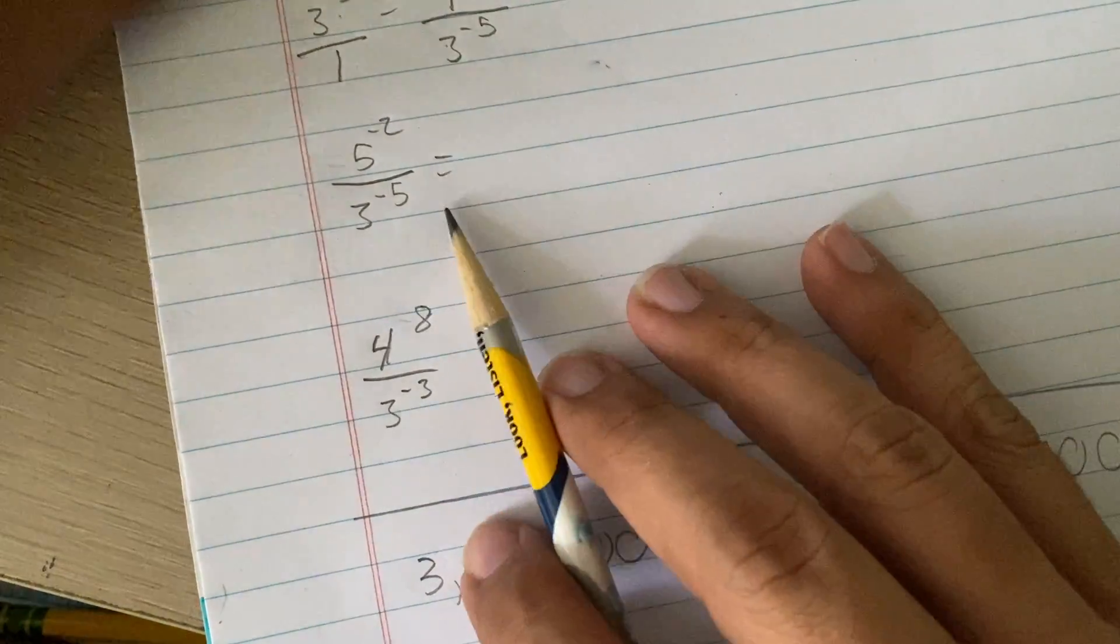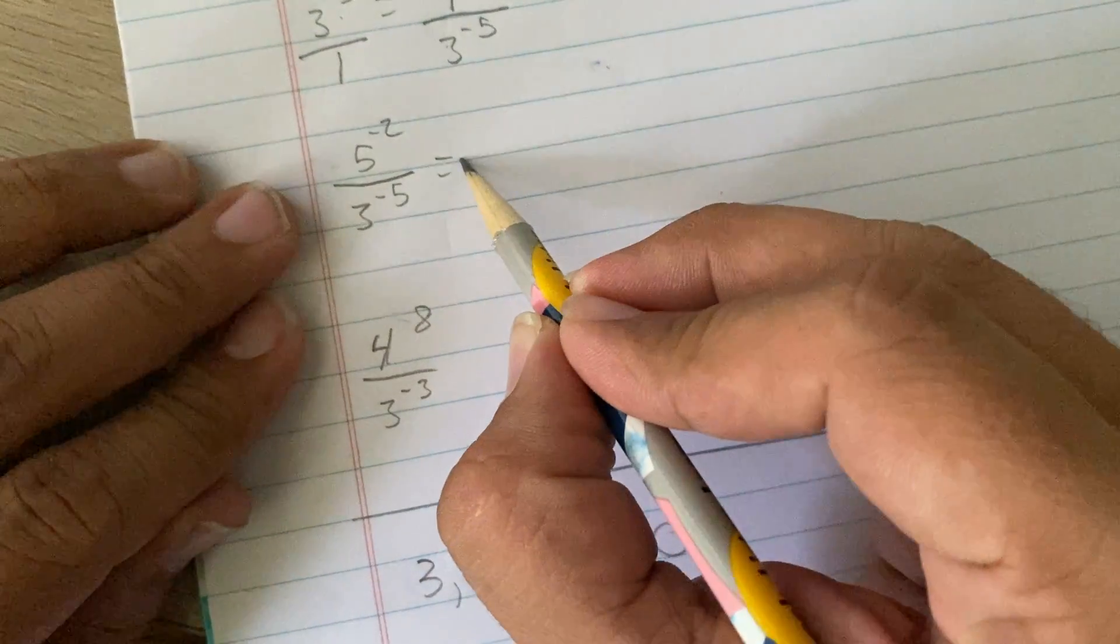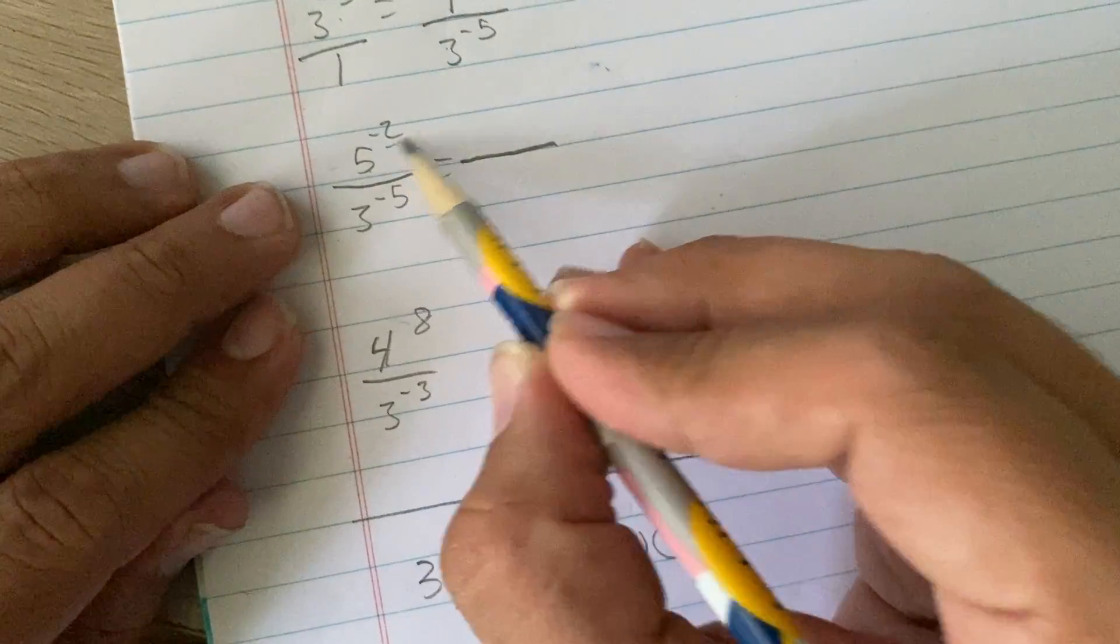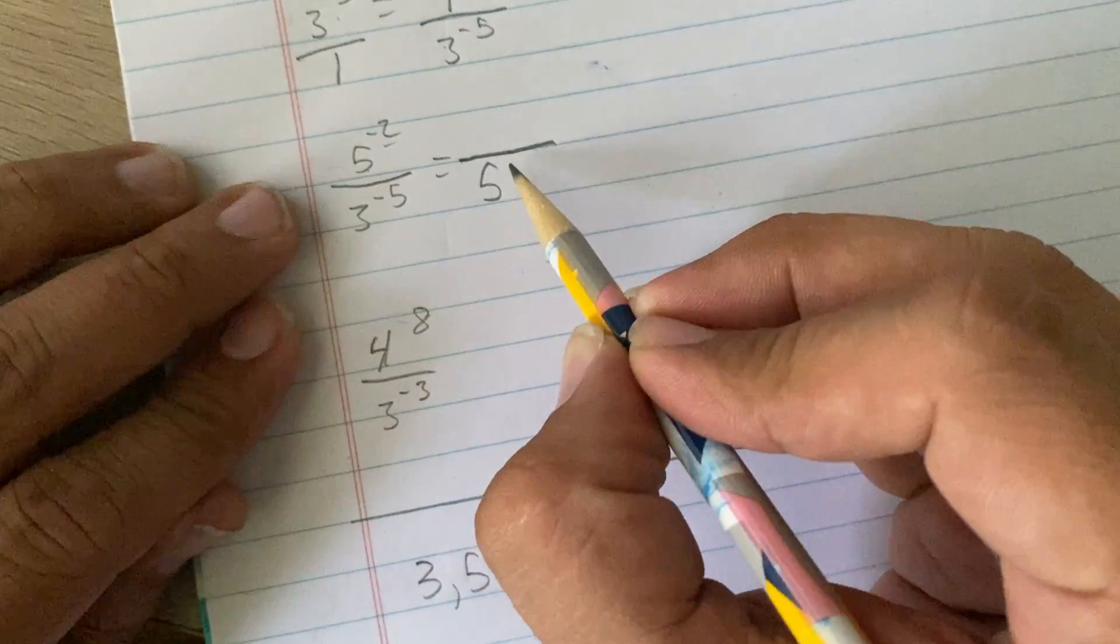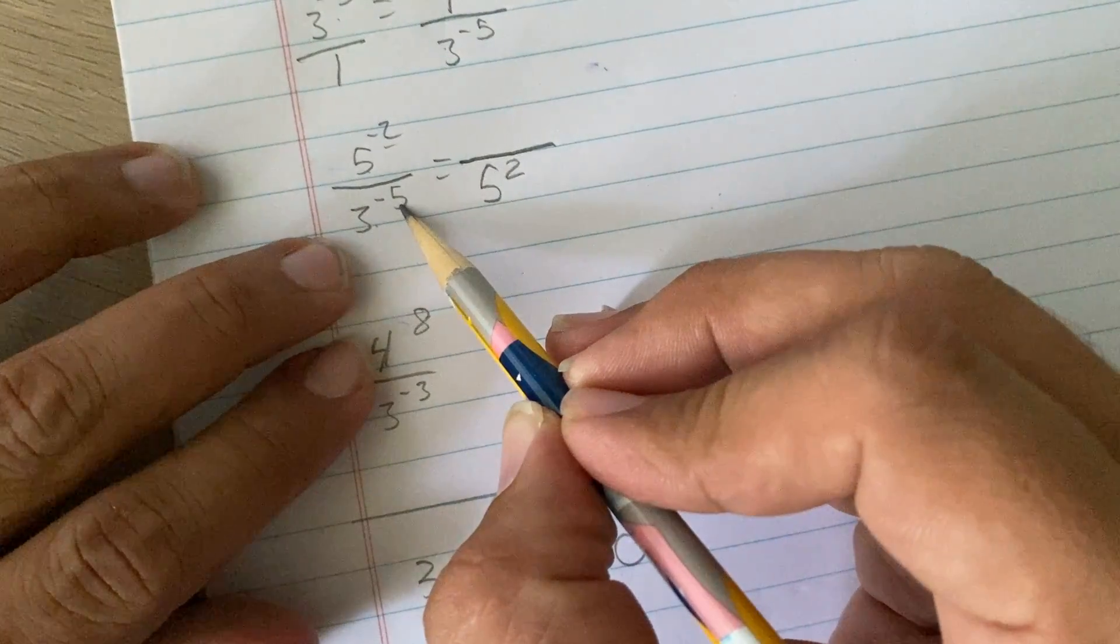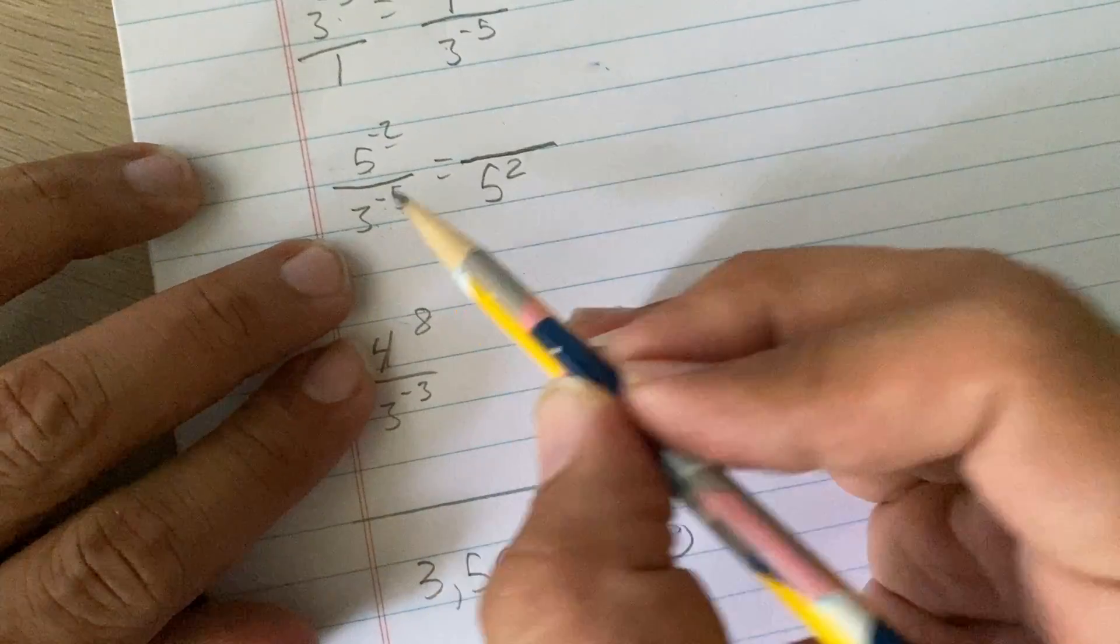Here's another example. Now, both of these have a negative sign, which means they're both in the wrong spot. So, this is in the wrong spot. It's in the top, so it actually belongs at the bottom. This one is at the bottom, which means it belongs in the top because it says, I'm in the wrong spot.